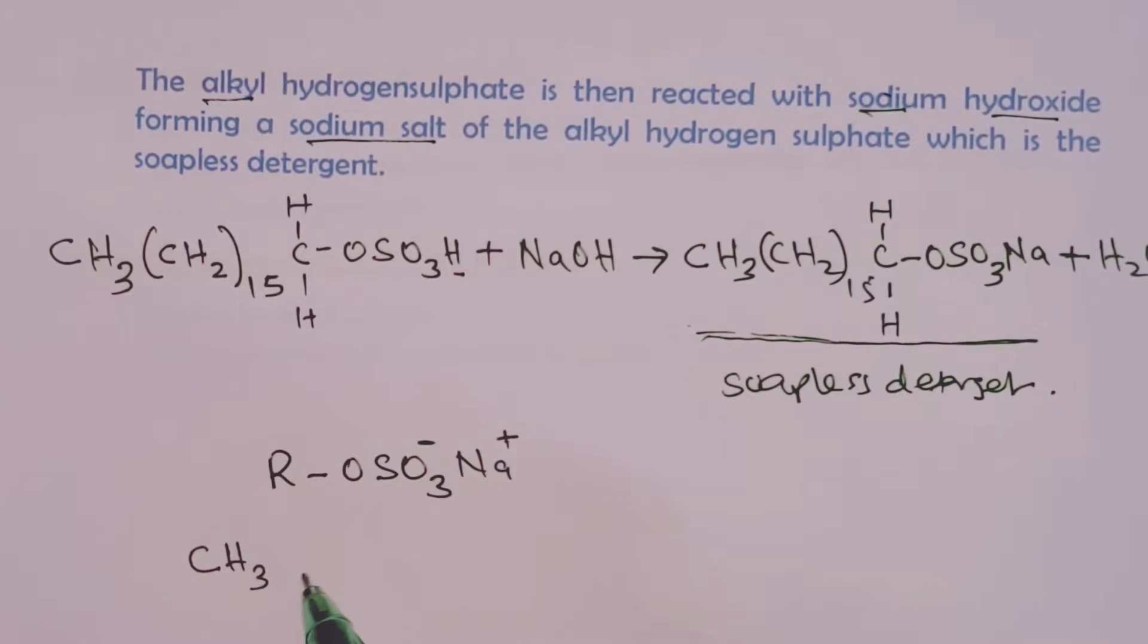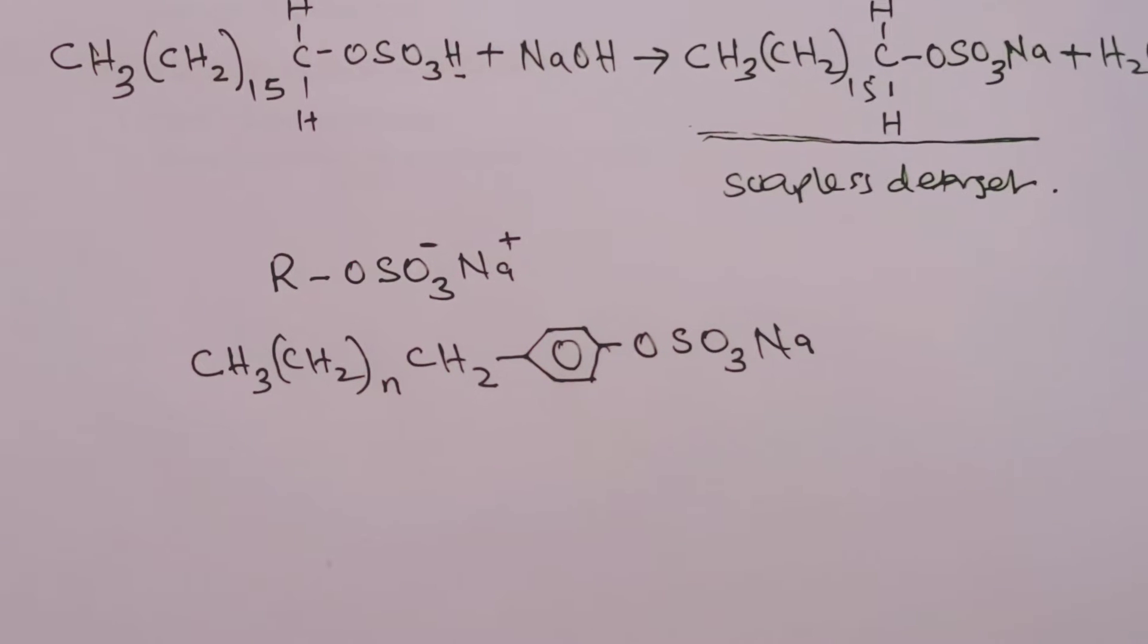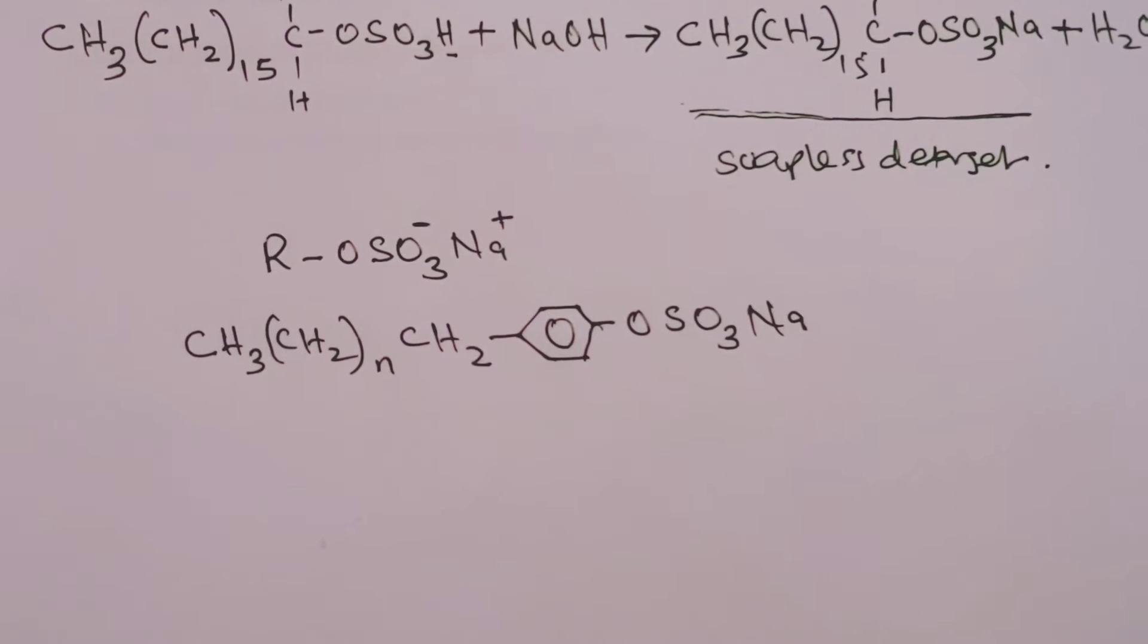So CH3, CH2 appearing n times depending on the length of the chain that is used, and then we have CH2. Then we shall have a benzene ring forming part of the hydrocarbon chain, and finally we have the head OSO3Na. This now becomes the structure of most commercial detergents. We are introducing the benzene ring just to improve on the cleaning qualities of commercial detergents.